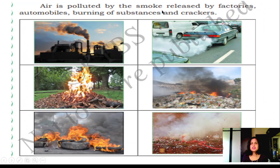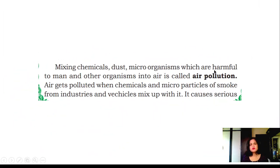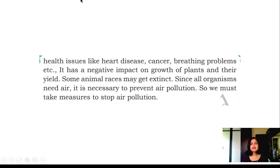Air is polluted by smoke released by factories, automobiles, burning of substances, and crackers. Mixing harmful chemicals, dust, and microorganisms into the air is called air pollution. Air gets polluted when chemicals and microparticles of smoke from industries and vehicles mix with it. This causes serious health issues like heart disease, cancer, and breathing problems. It has a negative impact on the growth of plants and their yield, and some animal species may become extinct. Since all organisms need air, it is necessary to prevent air pollution.